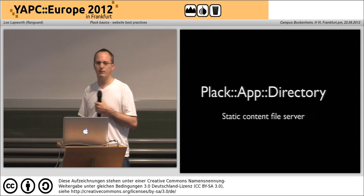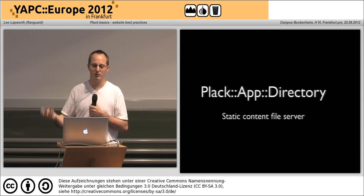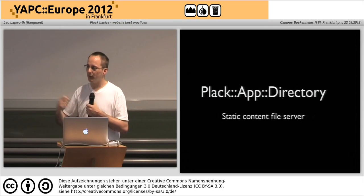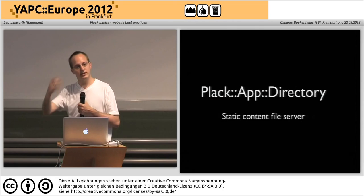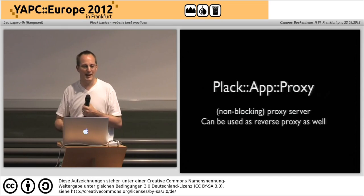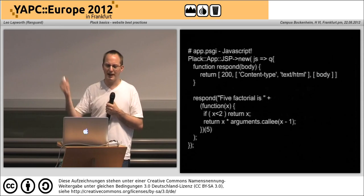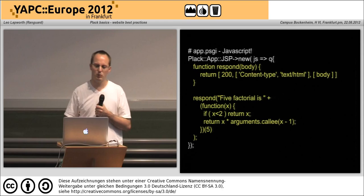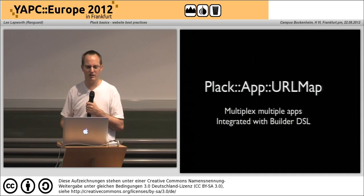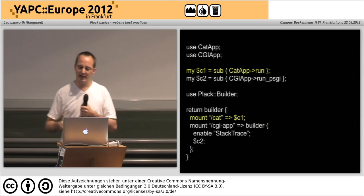There's Plack::App::Directory — I saw on IRC the other day someone was asking 'can I access your mirror of CPAN on your local machine?' Well, if you literally just use Plack::App::Directory and point it at a directory, suddenly that whole directory and subdirectories are available for someone to browse. There's Plack::App::Proxy which is a proxy server and does reverse proxying as well, and Plack::App::JSP if you want to write JavaScript running under your PSGI environment.